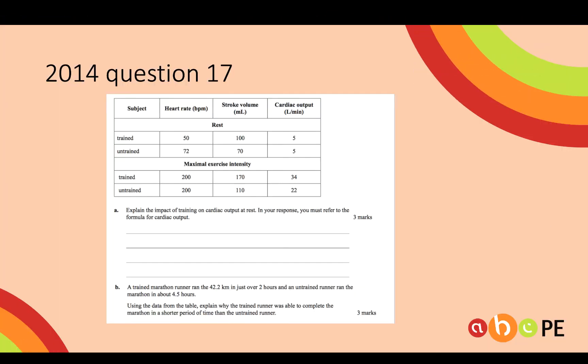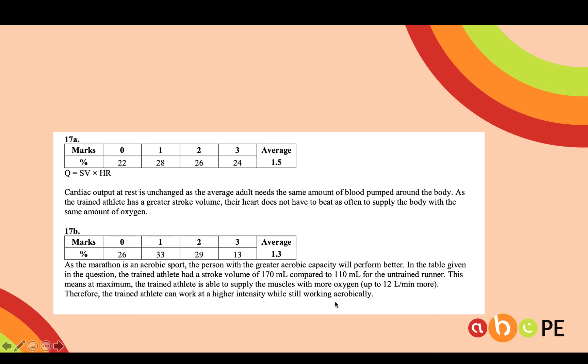Hopefully that demonstration made it a little bit easier to get your head around that. Here's a question from 2014 where you can apply that knowledge to a VCAR question — both A and B are worth doing. Getting three out of three for this one puts you up around a study score of 40.